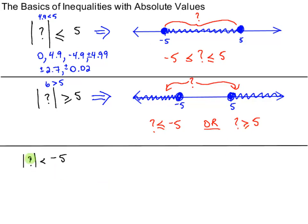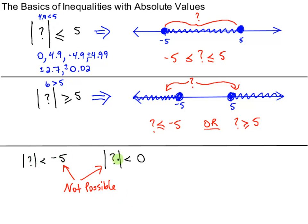Now, the absolute value of question mark is less than negative 5. That clearly does not make any sense, because the left side is never going to be a negative number. So how can something that's not negative be less than negative 5? This is impossible, and so is this statement: the absolute value of question mark is less than 0. These are not possible — an absolute value can't be less than 0 or less than a negative number.